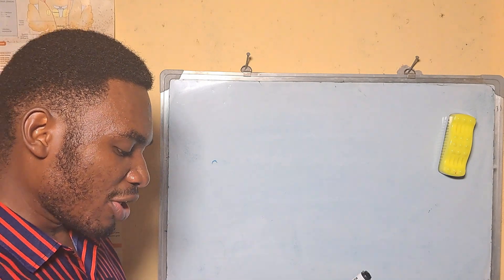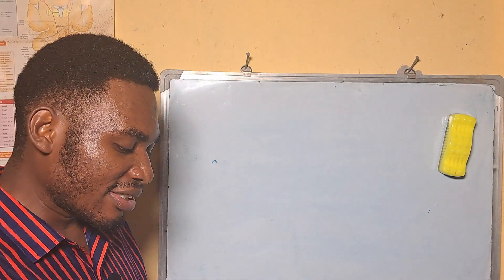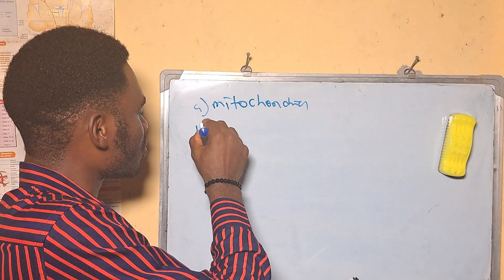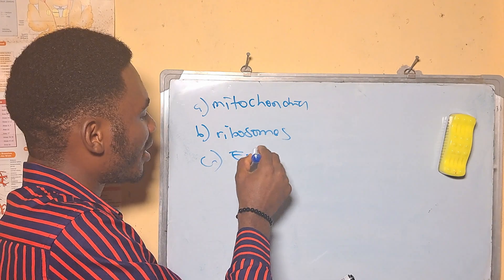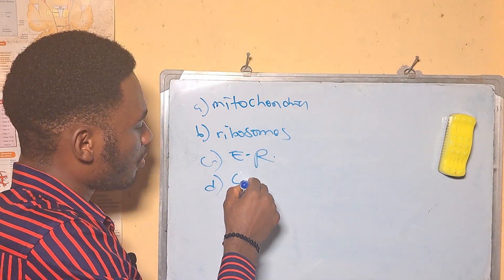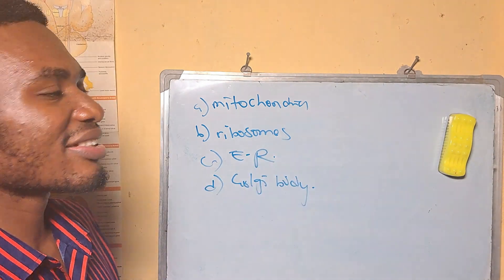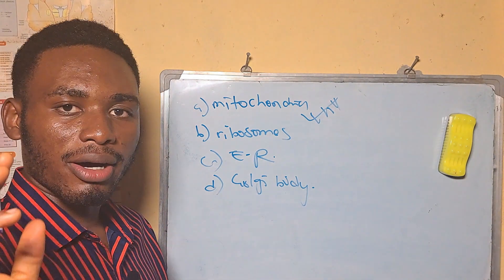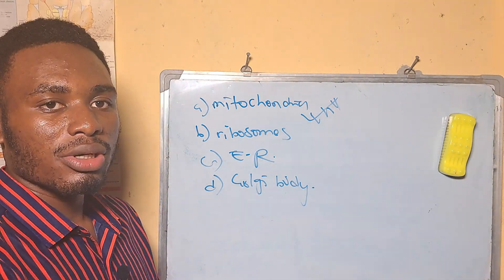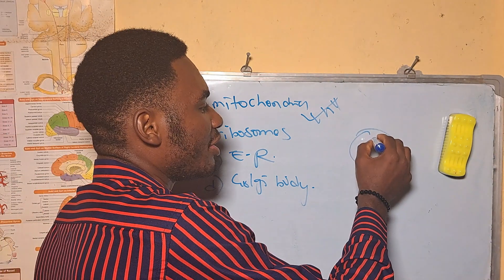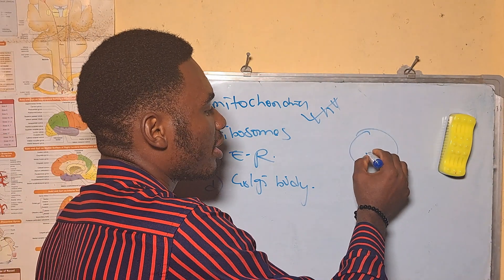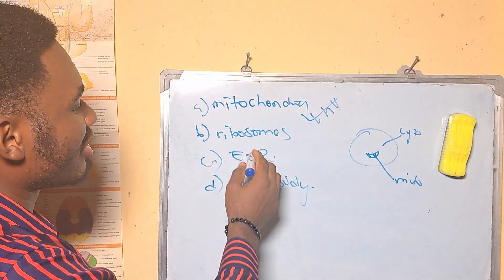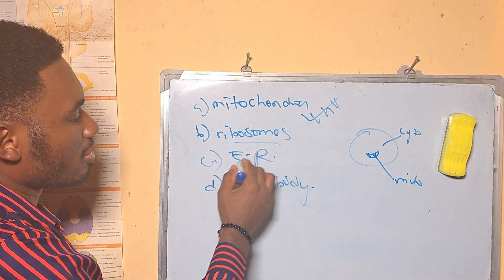The oxidative parts of the respiratory process take place in — A: mitochondria, B: ribosomes, C: endoplasmic reticulum, D: Golgi body. The answer is A, mitochondria. Respiration basically happens in two parts of the cell: either in the mitochondria or in the cytoplasm. Since cytoplasm is not listed, the answer is mitochondria.